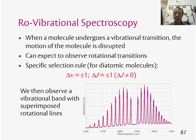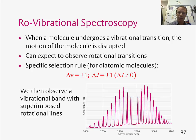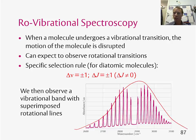What happens then is you get a vibrational band with superimposed rotational lines. In this example of the spectrum of HCl, you get a single vibrational band, and within that band we get these rotational lines. The shape of these two bands is very similar to what we saw earlier in this course for the rotational absorption spectra.